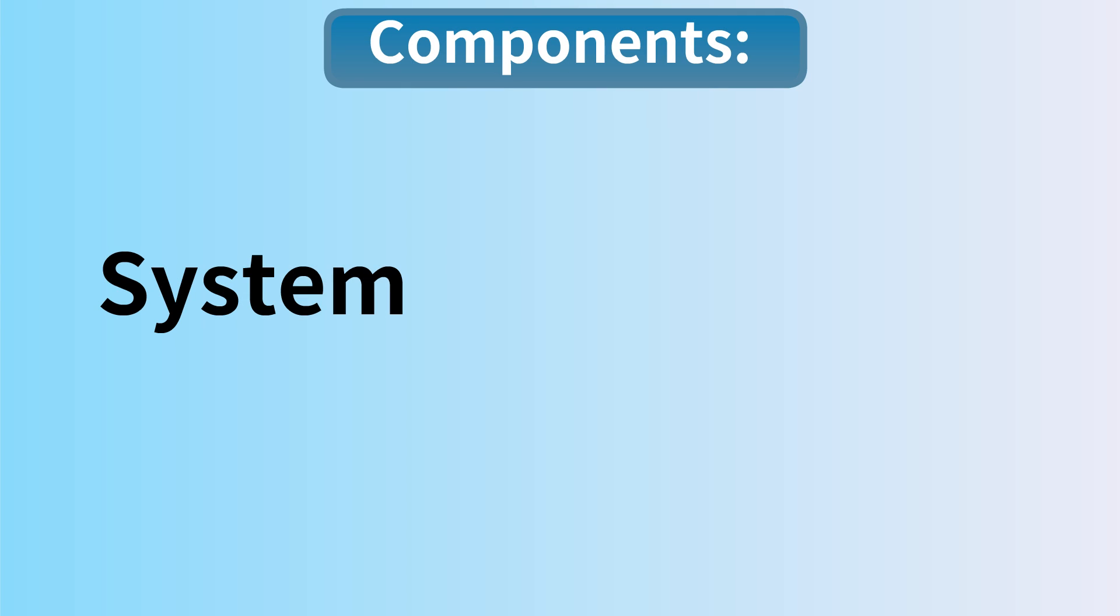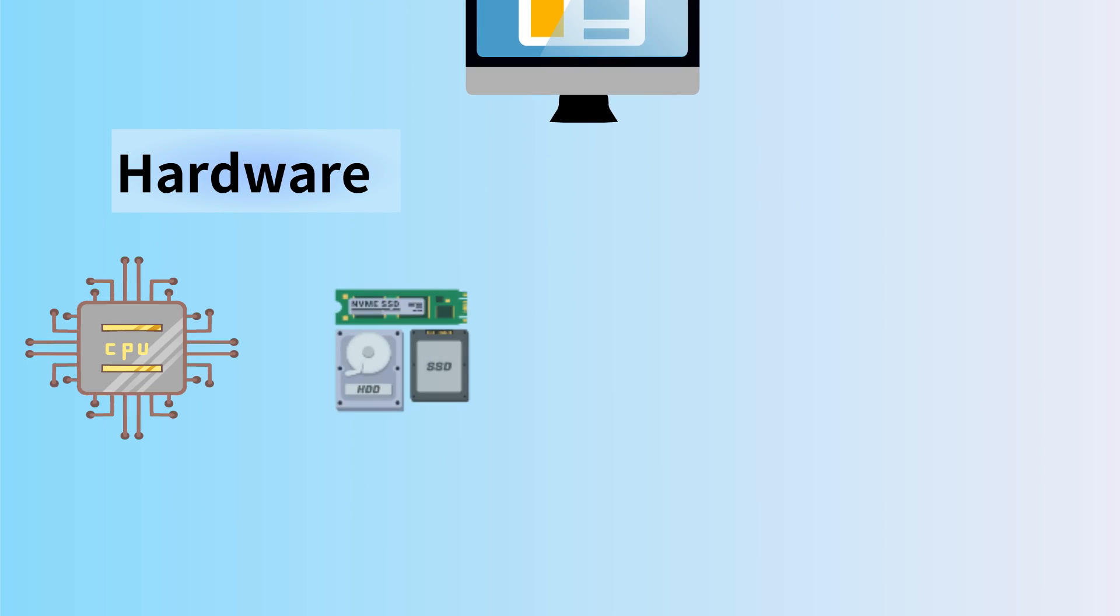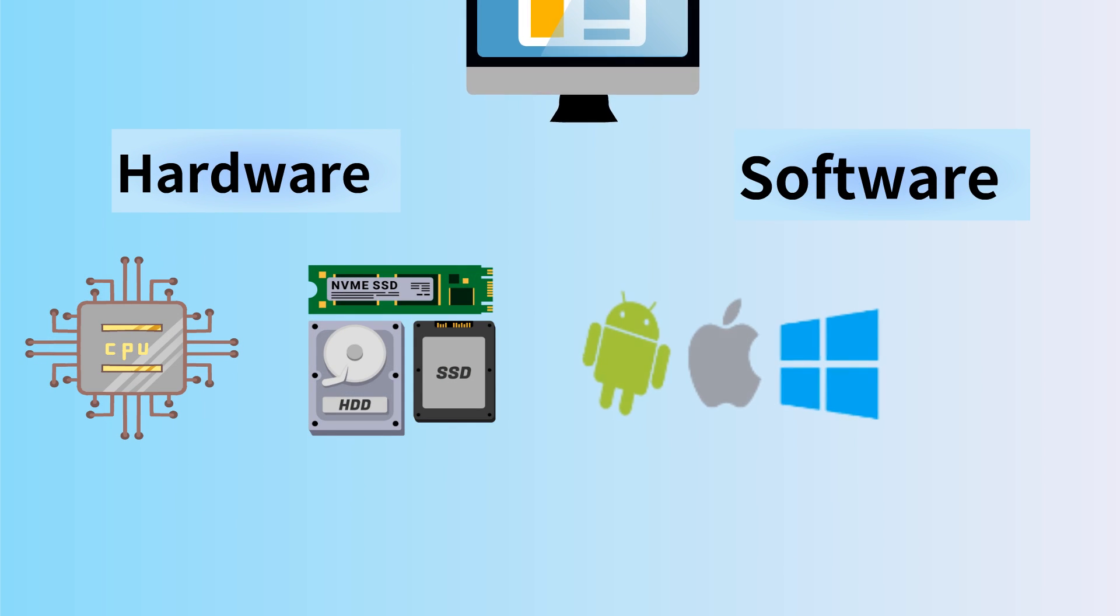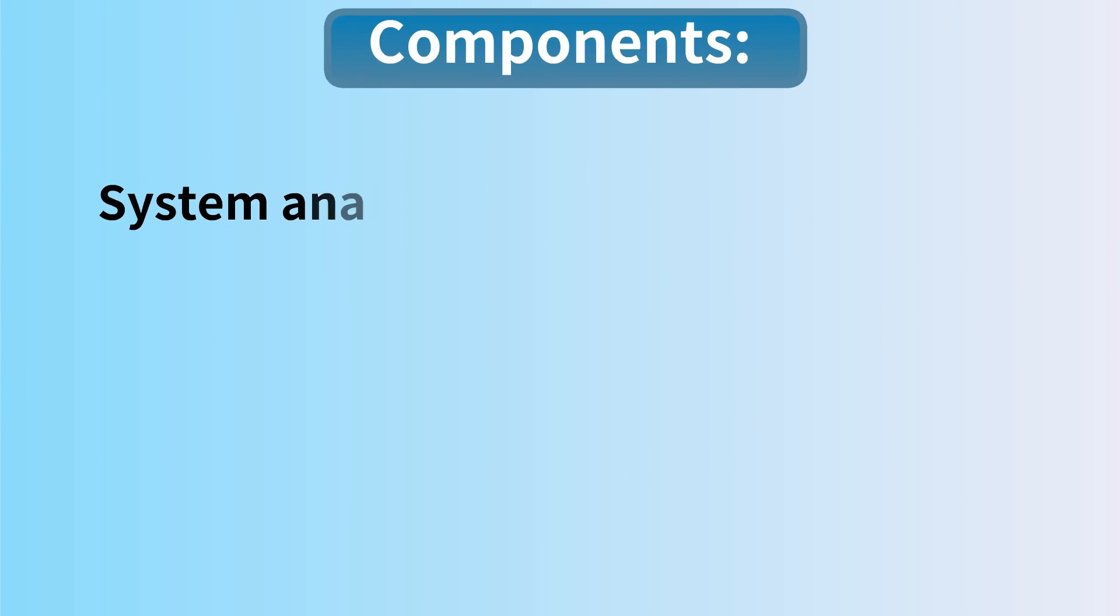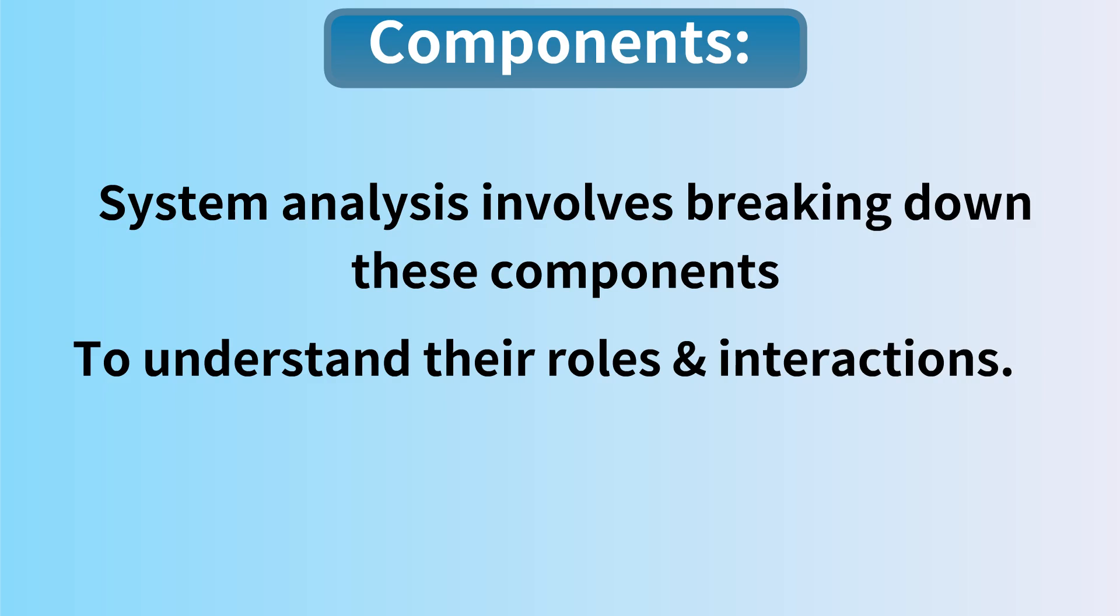Components: Every system is made up of parts or components. Think of a computer system—it has hardware like the CPU and memory, and software like the operating system and applications. System analysis involves breaking down these components to understand their roles and interactions.